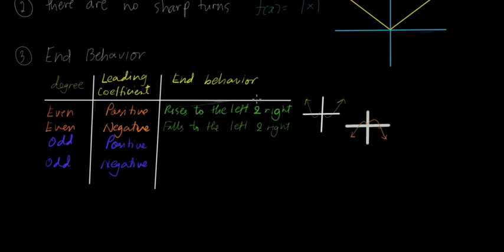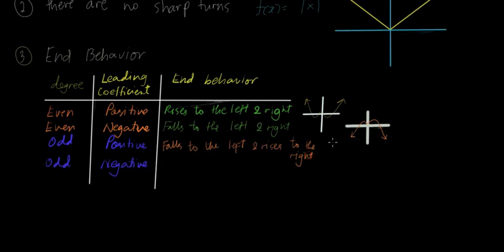How about odd and then the leading coefficient is positive? Odd and then positive. So kung odd at positive yun, it will fall to the left and then it rises to the right. So pwedeng ganito — it falls to the left, then rises to the right. Parang ganito yung itsura nya.